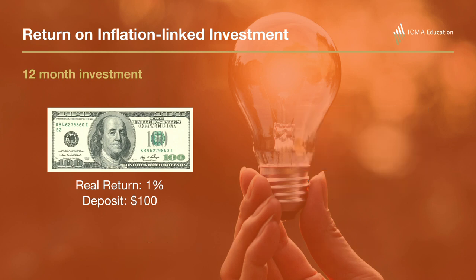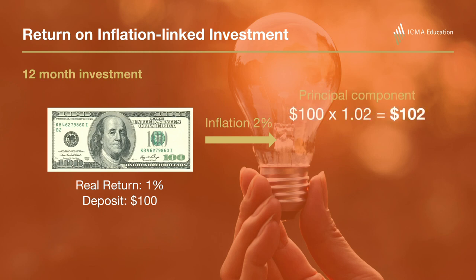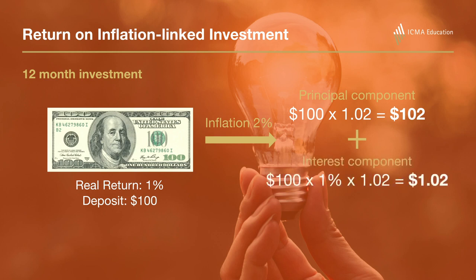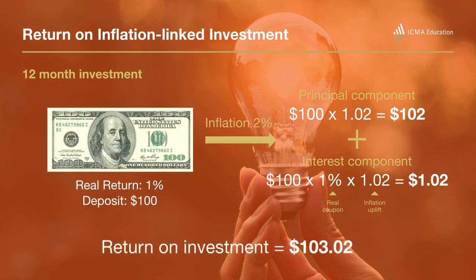So what is the return on the investment? The individual will be repaid their initial investment of $100 plus a 2% uplift for inflation, equal to $102. They will also receive a real rate of return of 1%, which in cash flow terms equates to $1.02 per $100 nominal. This is the coupon uplifted by inflation of 2%. So how much would they receive at maturity? $103.02 — enough to buy 1% more goods and services, as illustrated by the chocolate example.